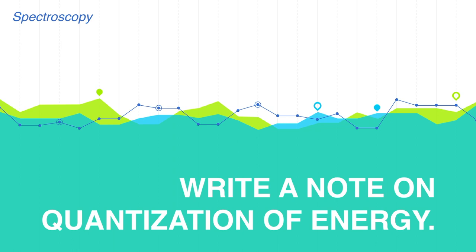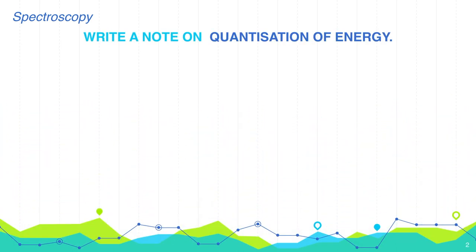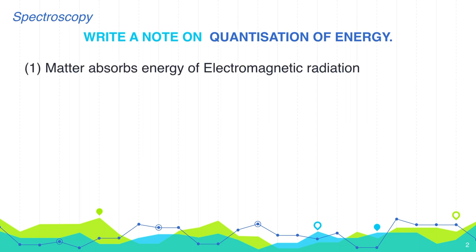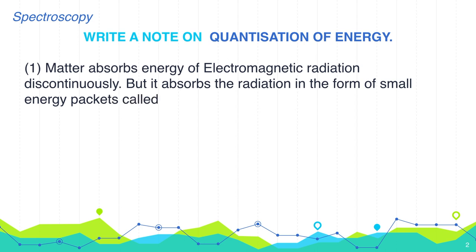To explain this dual nature of electromagnetic radiation, Max Planck has given the theory of quantization of energy. According to this theory, matter absorbs energy of electromagnetic radiation discontinuously, but it absorbs the radiation in the form of small energy packets called quanta.